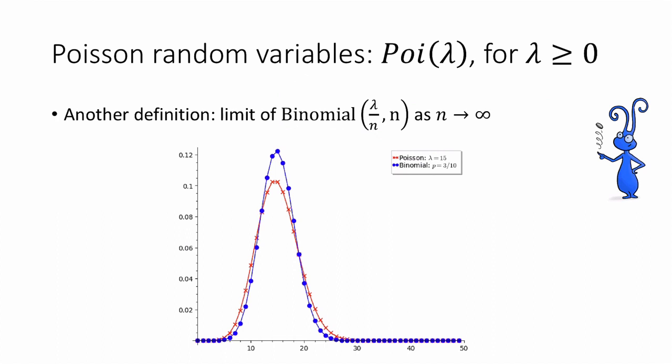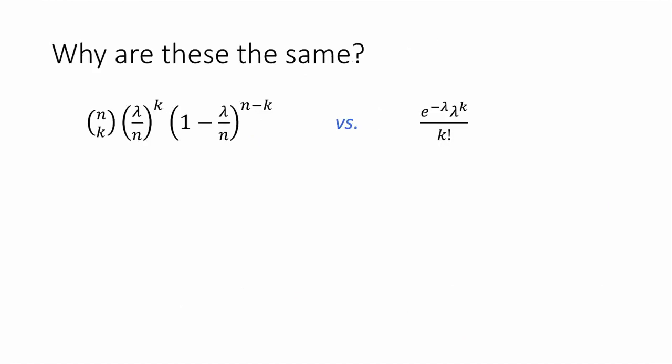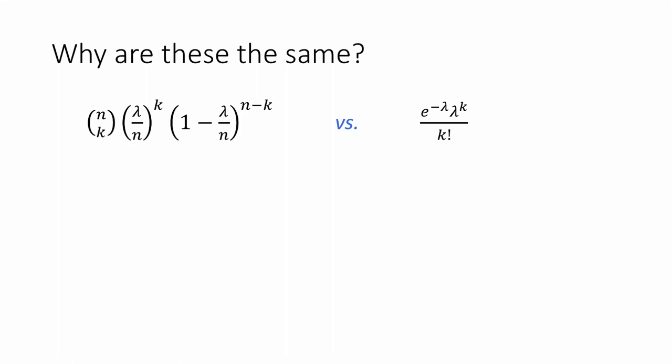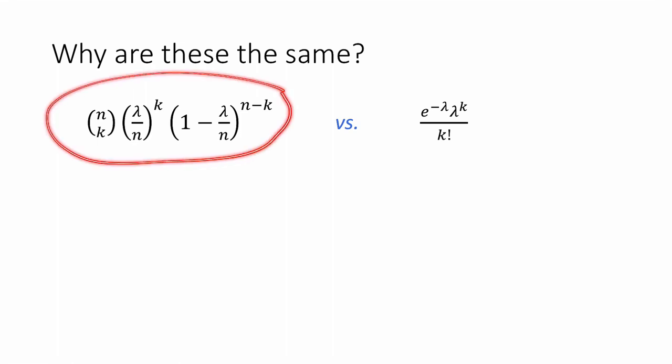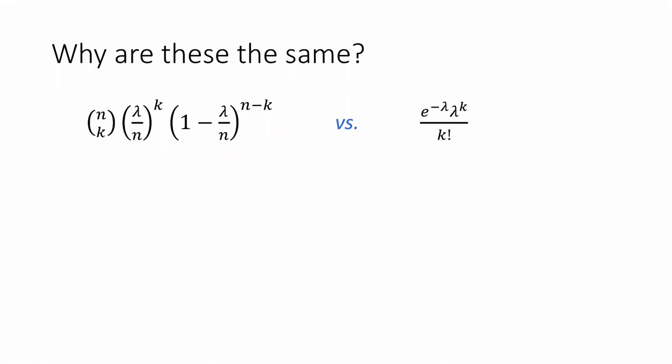To illustrate this, here I've plotted the Poisson distribution and the corresponding binomial distribution. You can see these are not exactly the same, but as n gets larger — here n is 50 — these are going to get closer and closer. So why are these two definitions the same? Why is it the case that a random variable with this probability mass function equals the limit of a random variable with the binomial probability mass function as n goes to infinity?